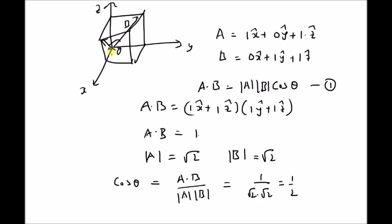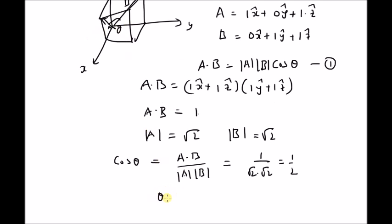So for this cube with one face on the xz plane and the other face on the yz plane, theta between the diagonals on the corresponding faces is clearly equal to cos inverse of 1 by 2, which is 60 degrees.